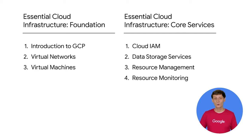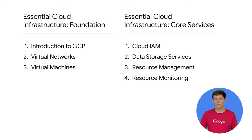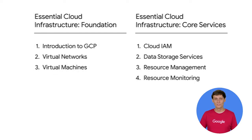Essential Cloud Infrastructure Core Services is the second course of this series. In that course, we start by talking about Cloud IAM, and you will administer identity and access management for resources. Next, we'll cover the different data storage services in GCP, and you will implement some of those services. Then we'll go over resource management, where you will manage and examine billing of GCP resources. Lastly, we'll talk about resource monitoring, and you will monitor GCP resources using Stackdriver services.